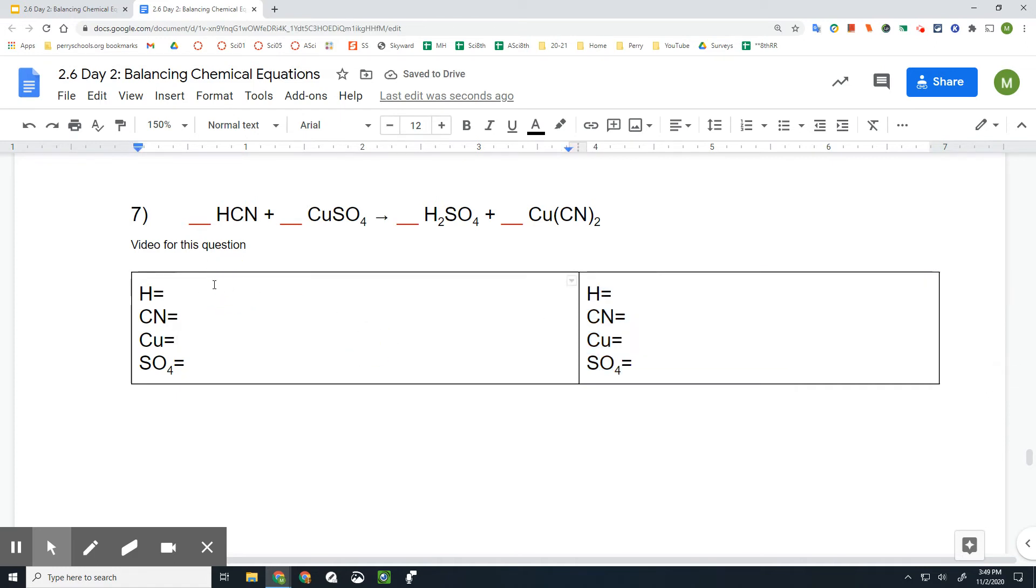All right, next thing I'm going to do is count how many elements are on each side. So the first one, I have one hydrogen, I've got one CN, I've got one copper Cu, and I've got one SO₄.